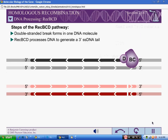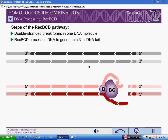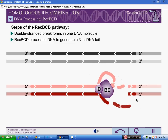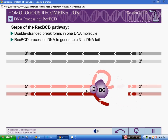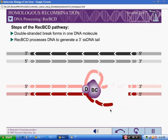REC-BCD binds to the DNA at the site of the double-stranded break. REC-BCD has both helicase and nuclease activities. It tracks along the DNA, unwinding the DNA and frequently cleaving each strand. The cleaved DNA is destroyed.